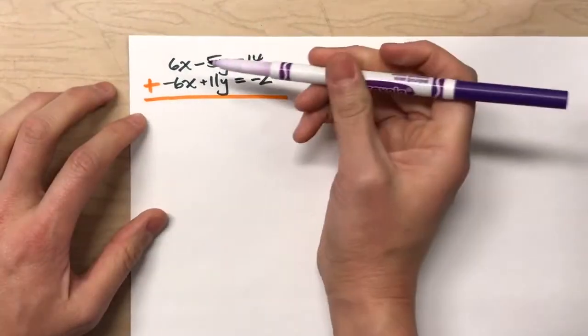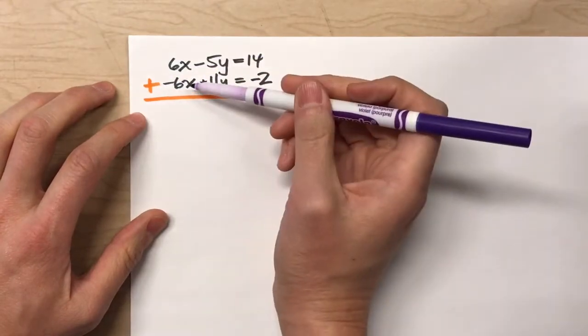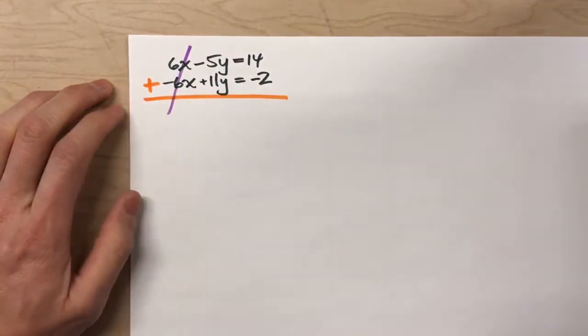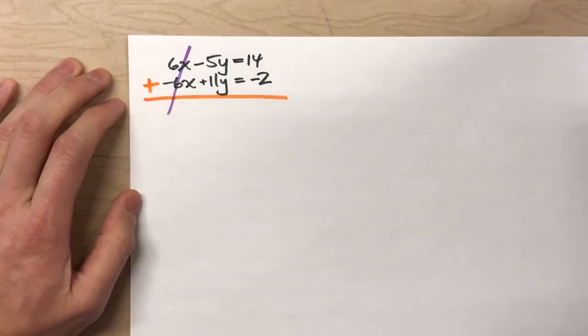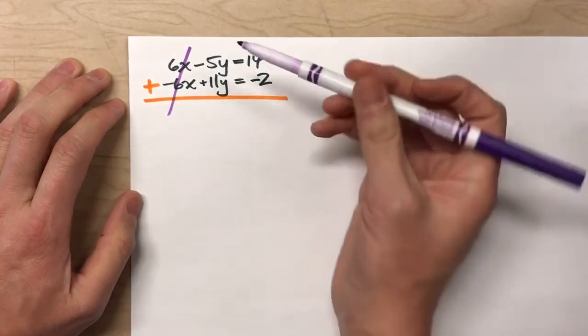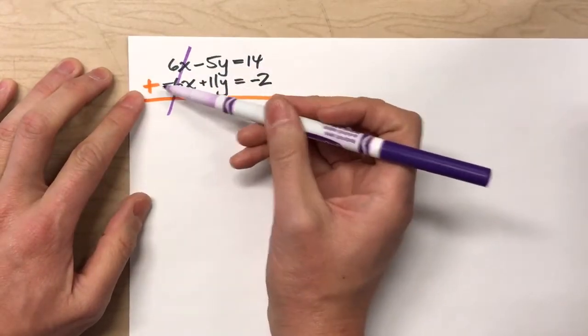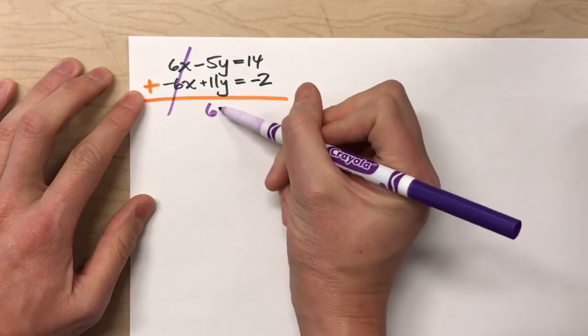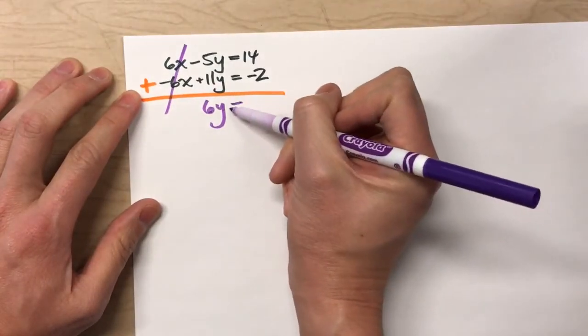Now, when I do that, 6x's plus negative 6x's eliminates all of the x's, because there's no x's left. Negative 5y plus 11y is 6y. Drop down my equal sign.